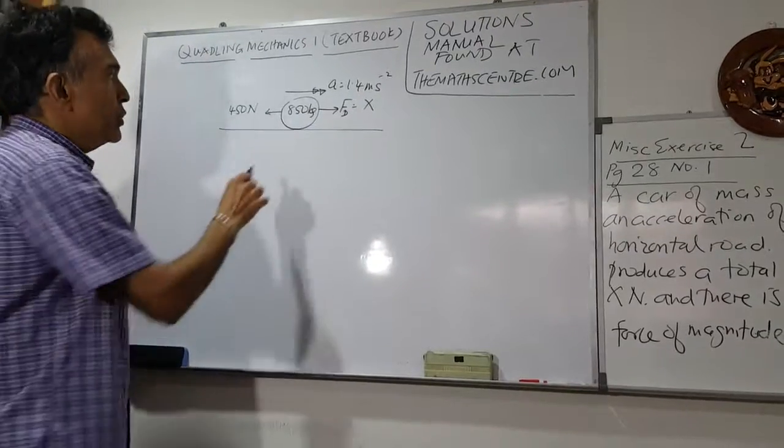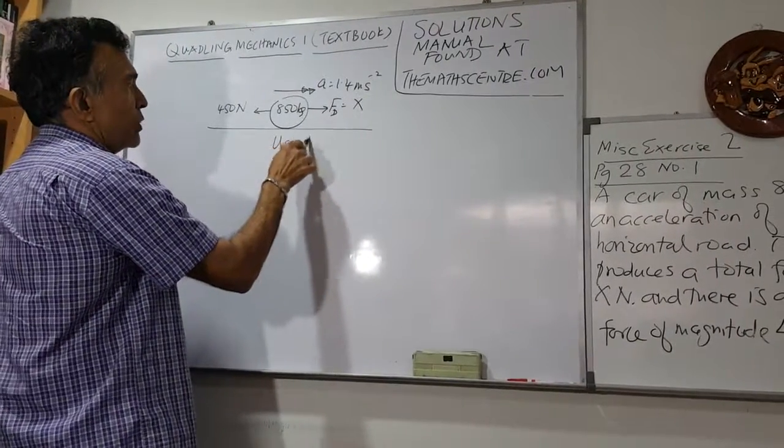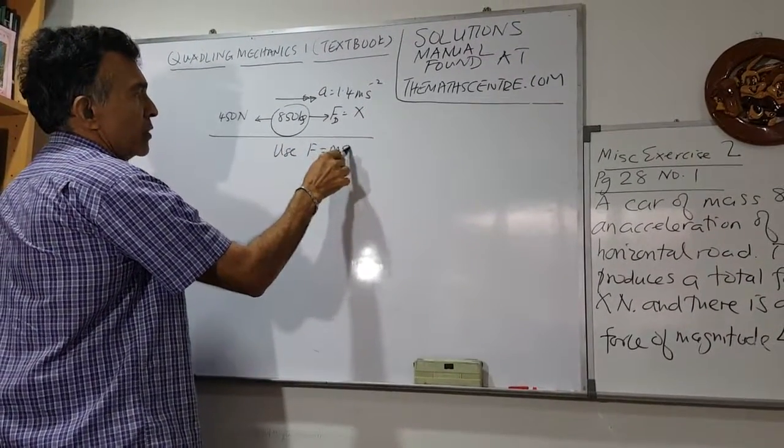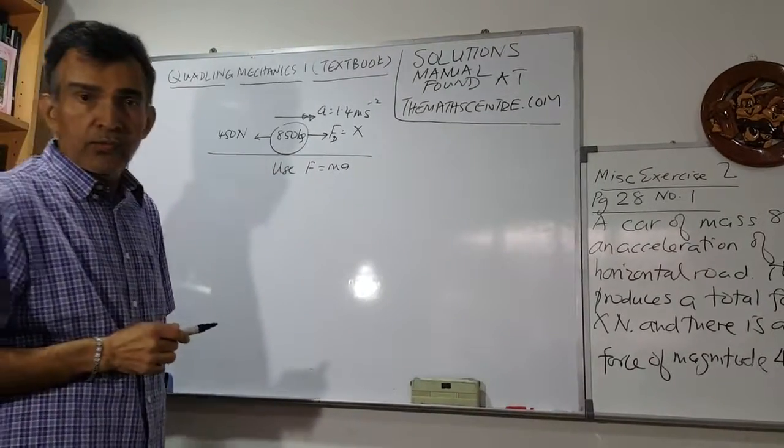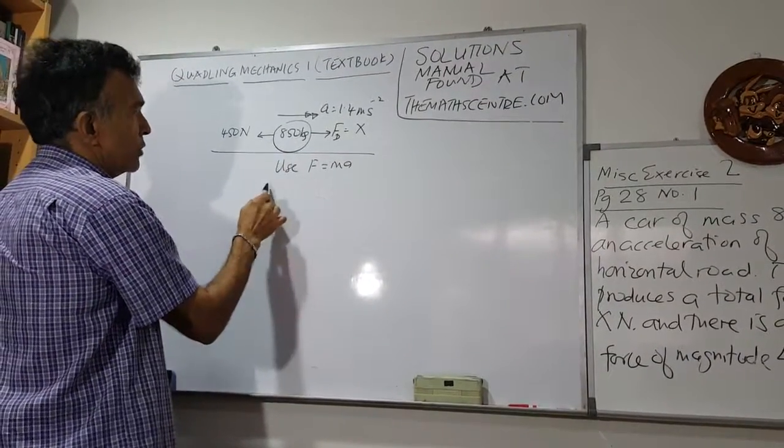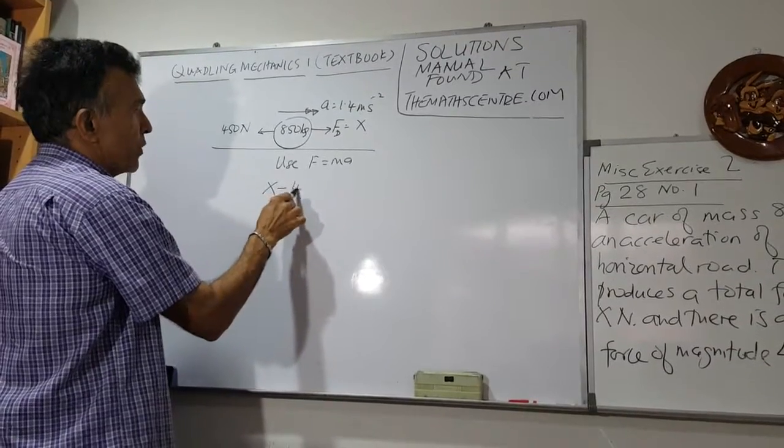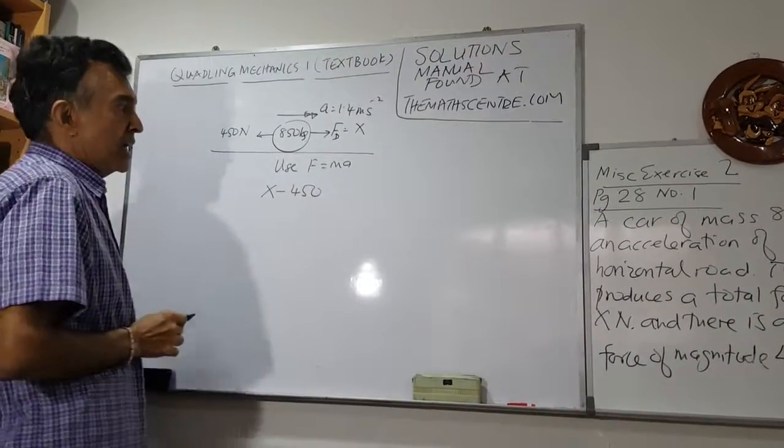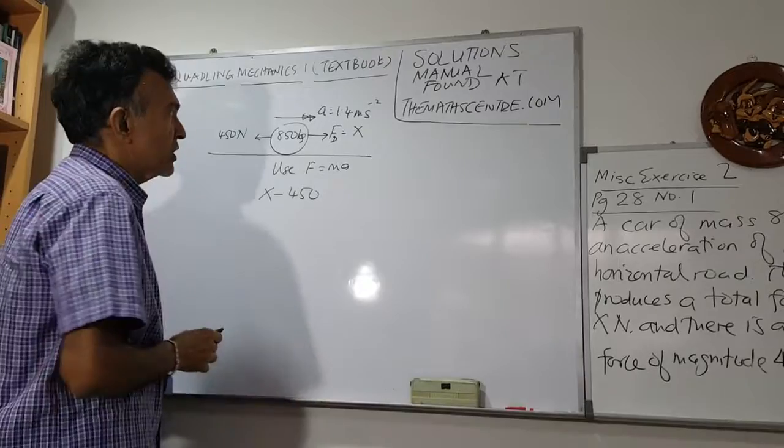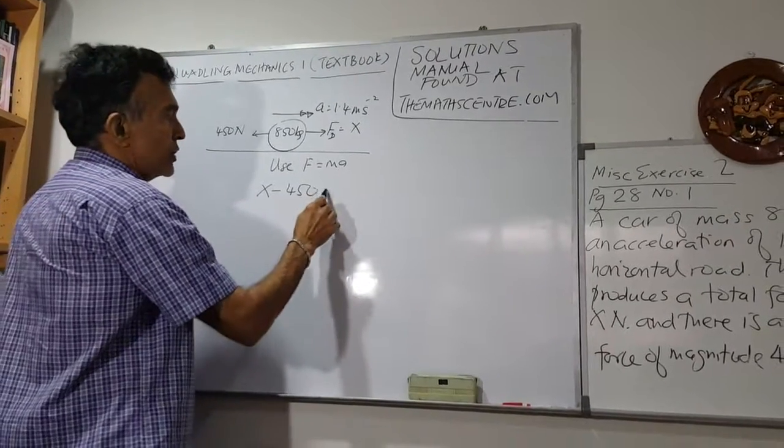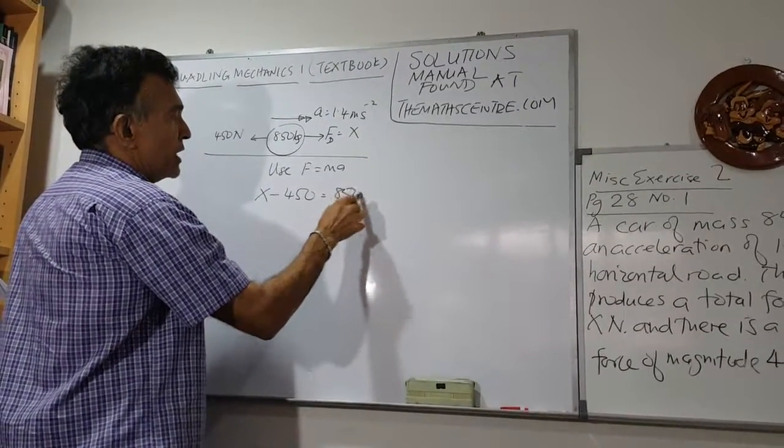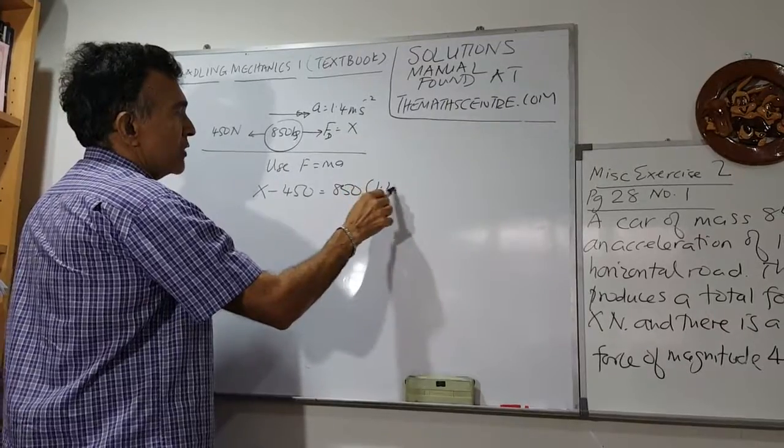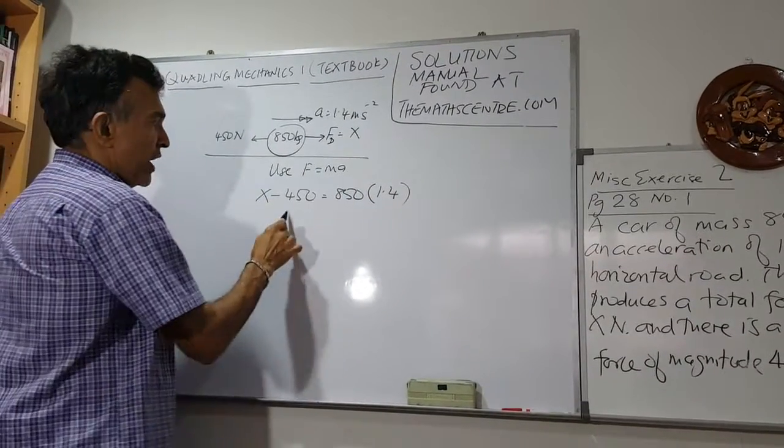So we will use F equals Ma. F is the resultant force. In this case, the resultant force will be X minus 450. And this resultant force produces an acceleration of 1.4. The mass is 850 and acceleration is 1.4.